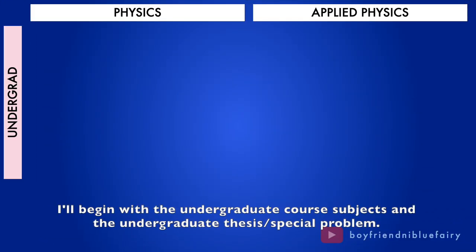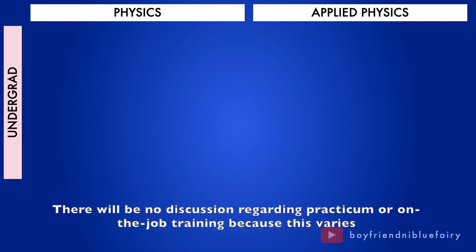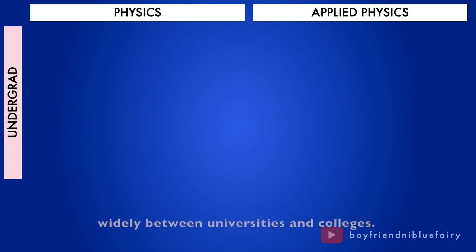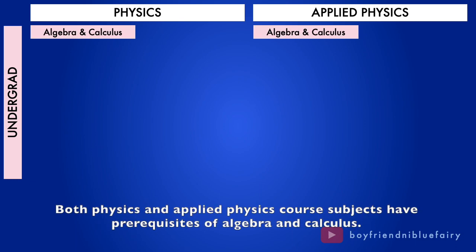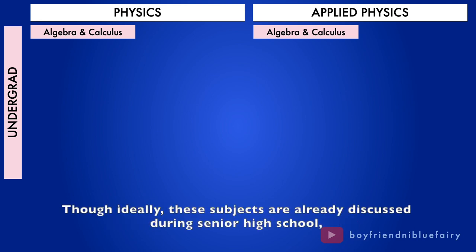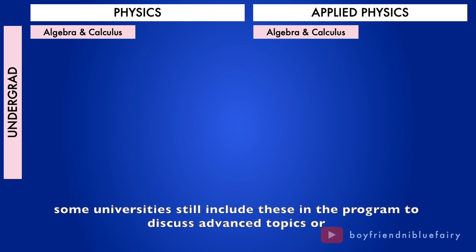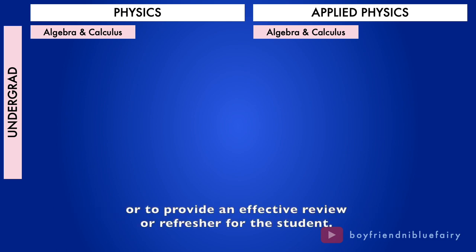I'll begin with the undergraduate core subjects and the undergraduate thesis or special problem. There will be no discussion regarding practicum or on-the-job training because this varies widely between universities and colleges. Both Physics and Applied Physics core subjects have prerequisites of algebra and calculus. Though ideally these subjects are already discussed during senior high school, some universities still include these in the program to discuss advanced topics or to provide an effective review or refresher for the student.